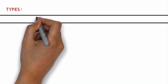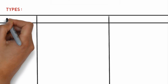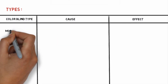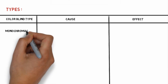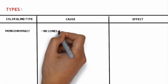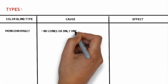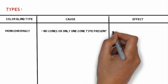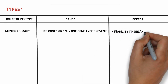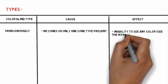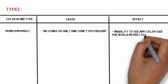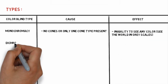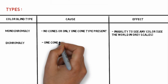Coming to the types of color blindness. There are total three types. The first one is monochromacy, caused due to no cones or only one cone type being present, leading to inability to see any color. The person only sees the world in gray scales.